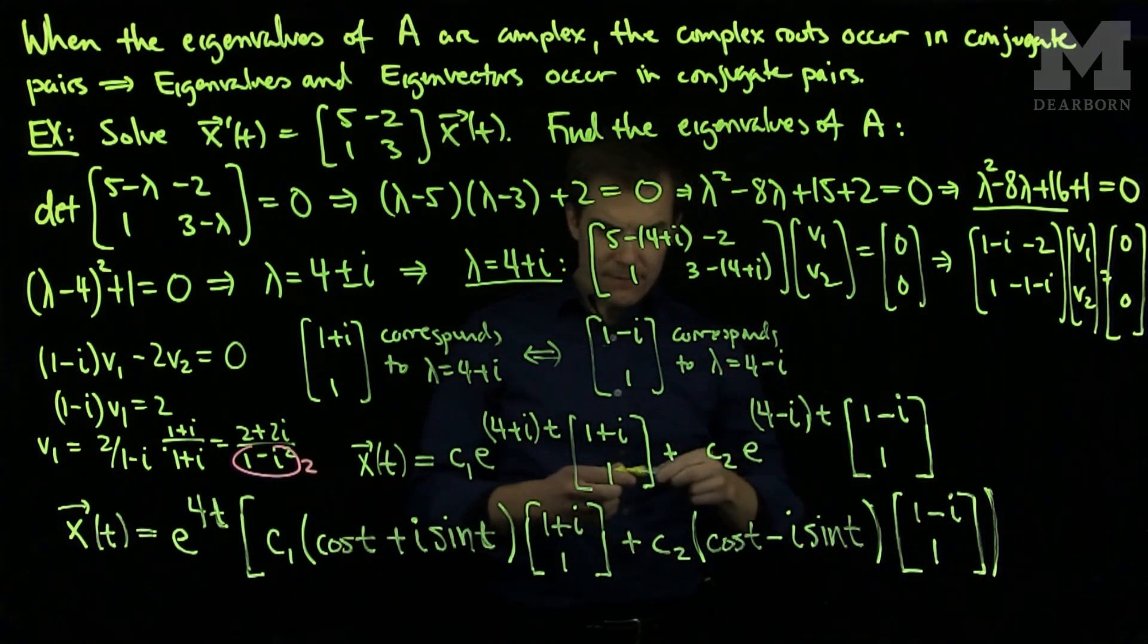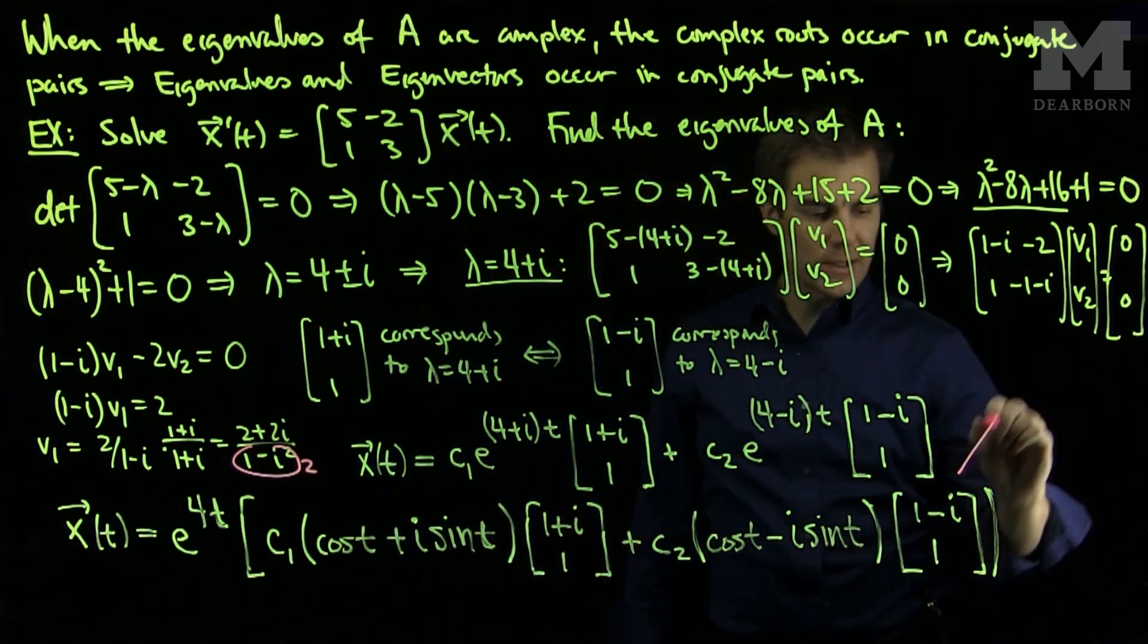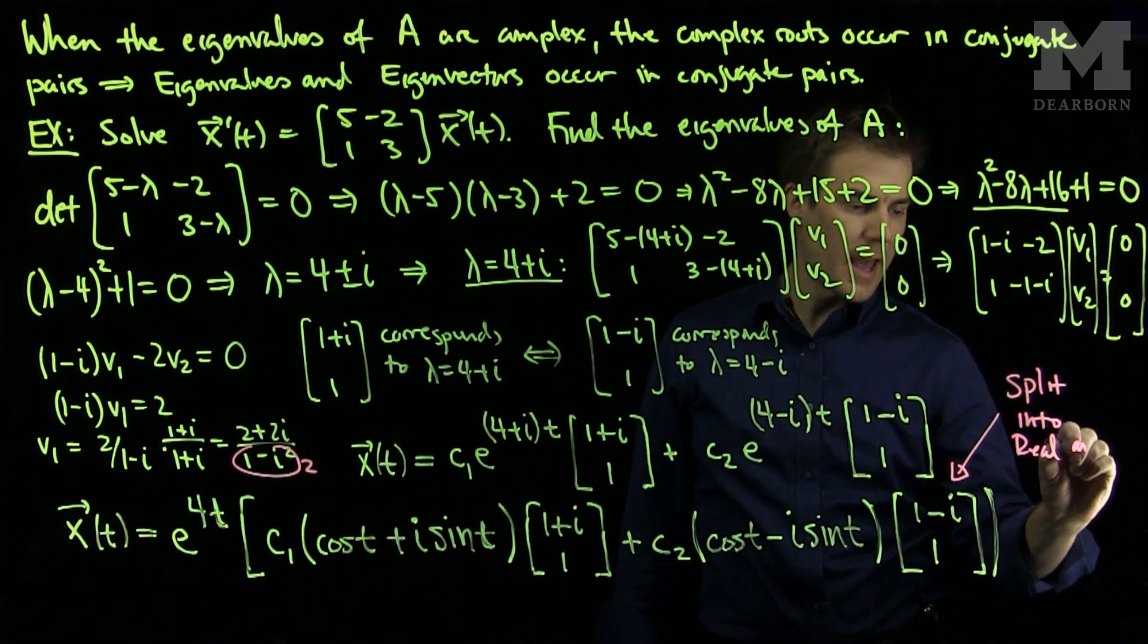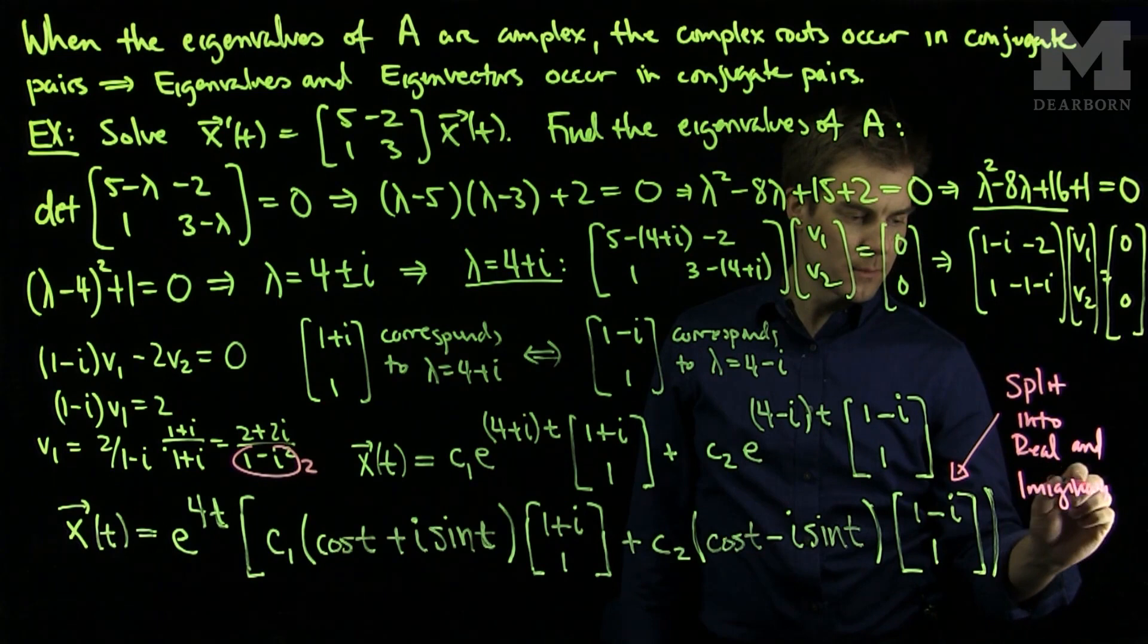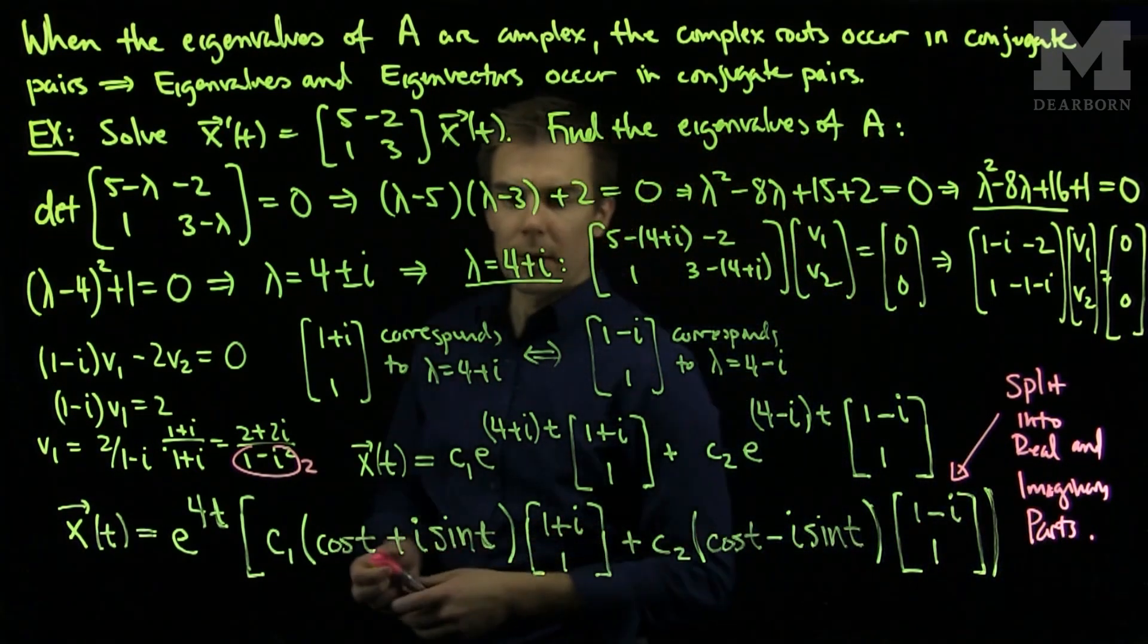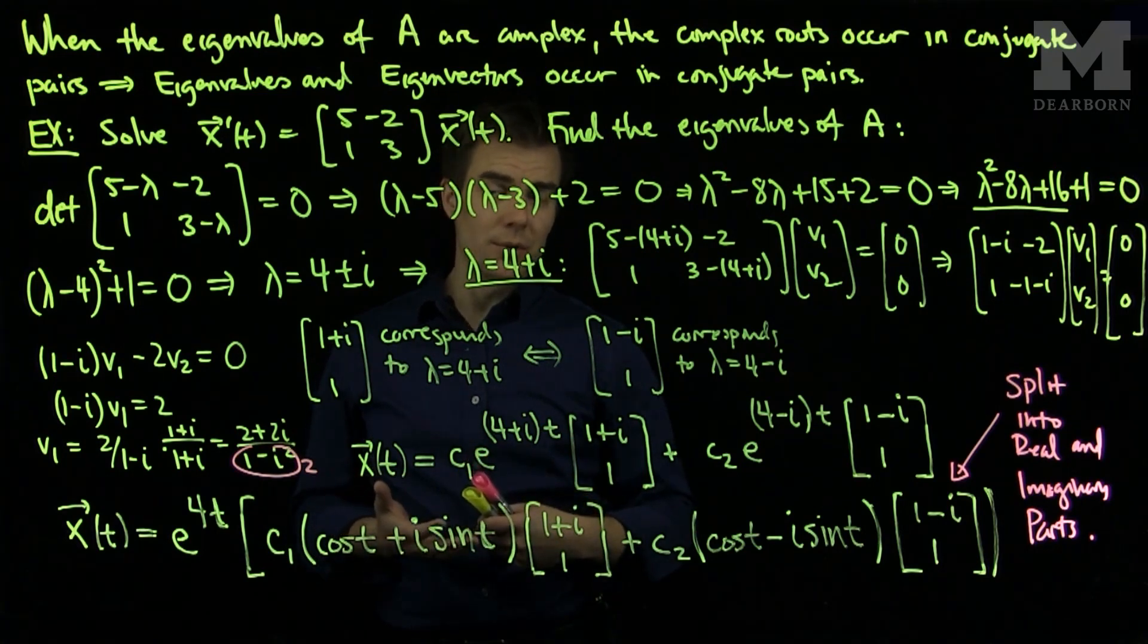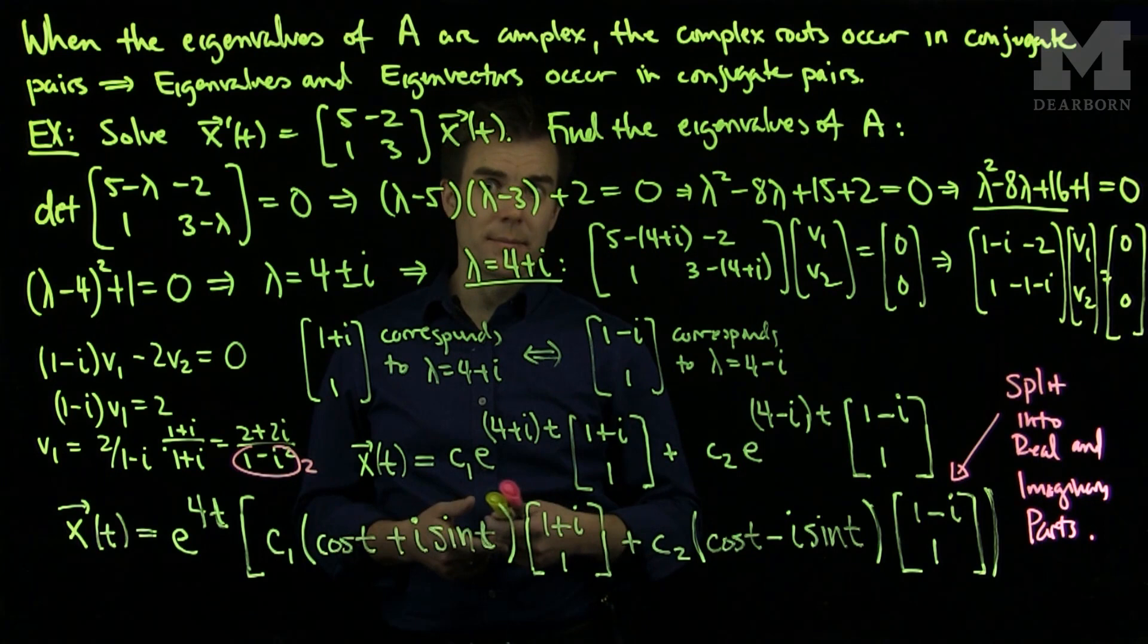The final step, the final simplification, we'll leave our answer in complex form, but the final simplification will be to split into real and imaginary parts. We see that when we have one complex root of a characteristic equation, I will also get the complex conjugate root, and the eigenvectors will be complex conjugates of each other. Thank you very much.